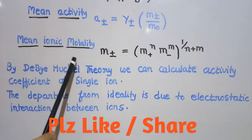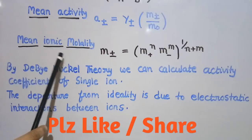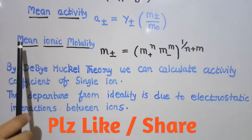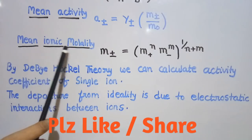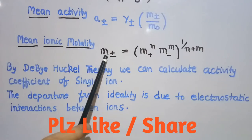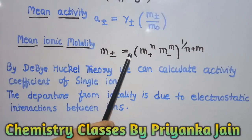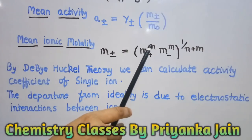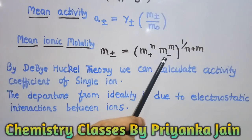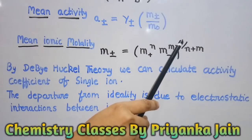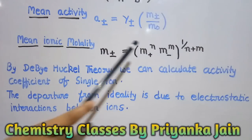You should know all of these formulas. Another important formula is the mean ionic molality. The mean ionic molality is given by: mean ionic molality equals the molality of the cation raised to power n, times the molality of the anion raised to power m, all raised to the power 1/(n+m).